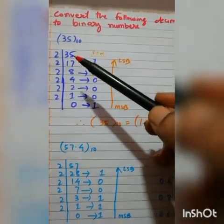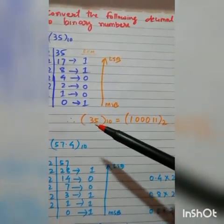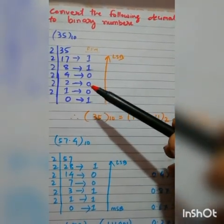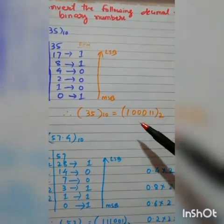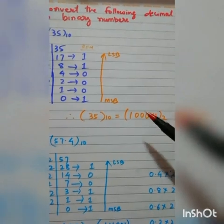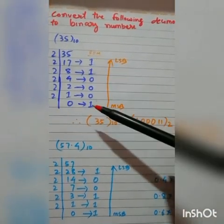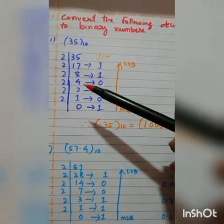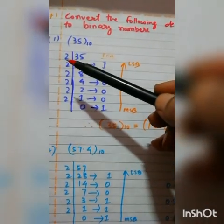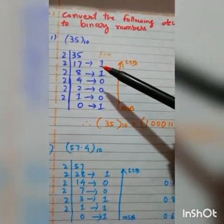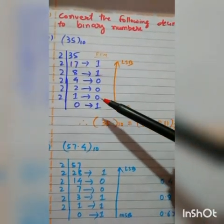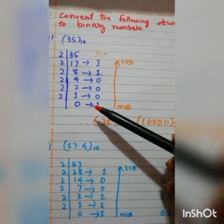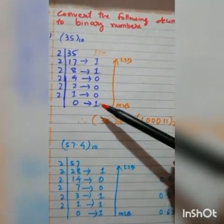The binary value of 35 is read from the remainders bottom to top: 1, 0, 0, 0, 1, 1 — that is 100011. Never write from top to bottom; always bottom to top. The step is: first divide by 2, write the remainder on the right side, repeat until the quotient is 0, then read remainders from bottom to top.